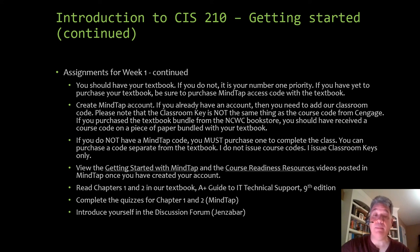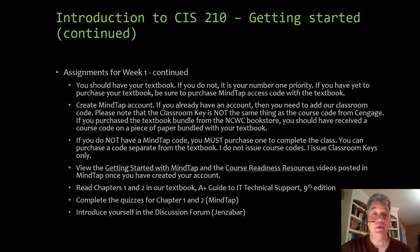Assignments for week one: you should have your textbook — we've covered that pretty well. Once you have your textbook, go ahead and create your MindTap account. If you already have a MindTap account, you don't need to create a new one for a new textbook. What you'll need to do instead is make sure you enter the proper Cengage code. Once you're able to access the materials for this textbook, you'll add our course key, which will add you to my classroom. If you're unfamiliar with how to do that, please let me know. The first step is to get that Cengage key.